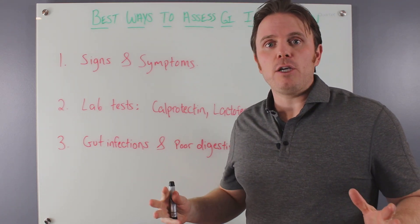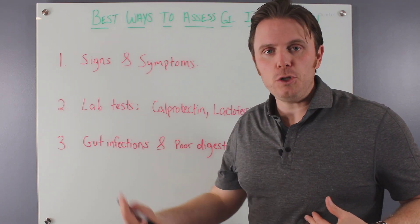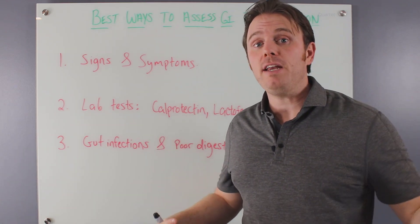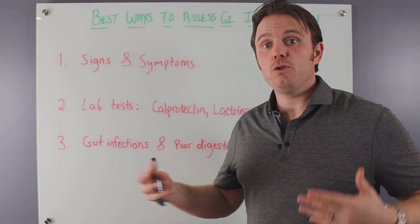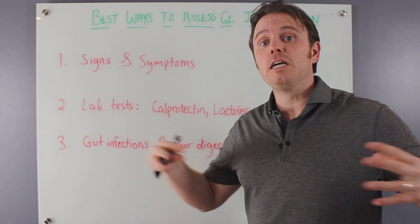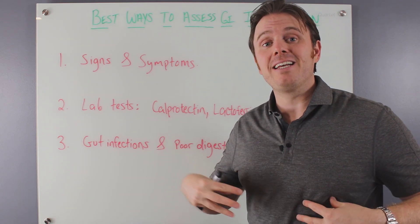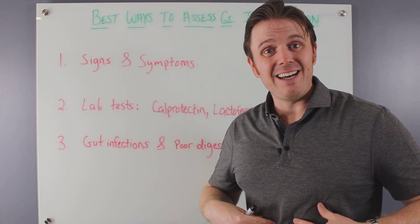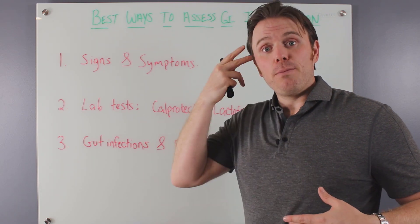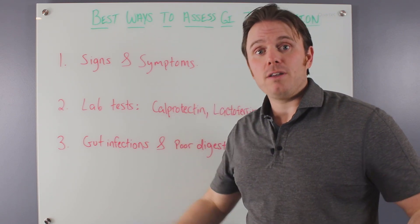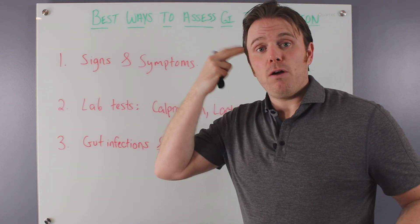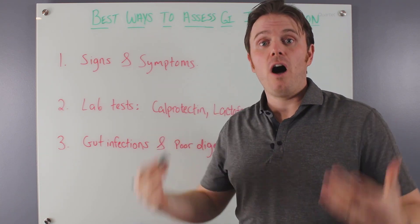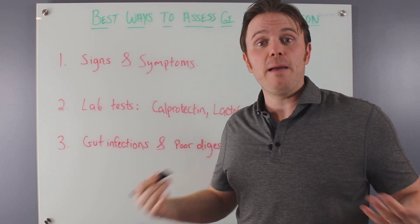A lot of gut inflammation can reside in mood issues and brain fog. If you're having chronic brain fog or chronic mood issues, there's a good chance there's a gut inflammation component. Inflammation in the gut equals inflammation in the brain — leaky gut that crosses the blood-brain barrier activates the microglial cells in the brain, which can create cognitive issues and brain fog.